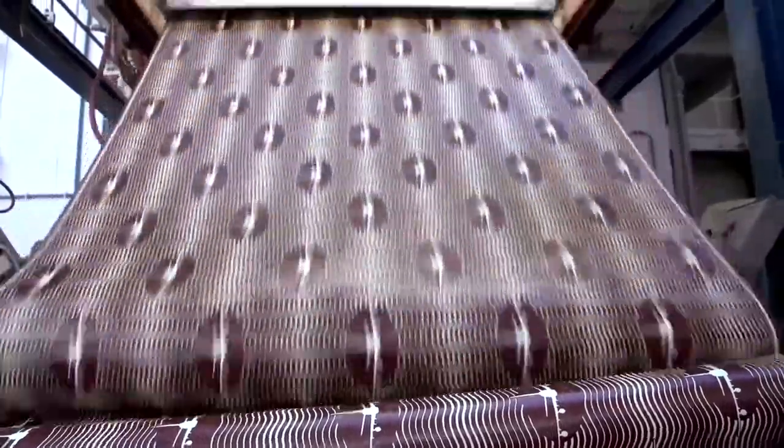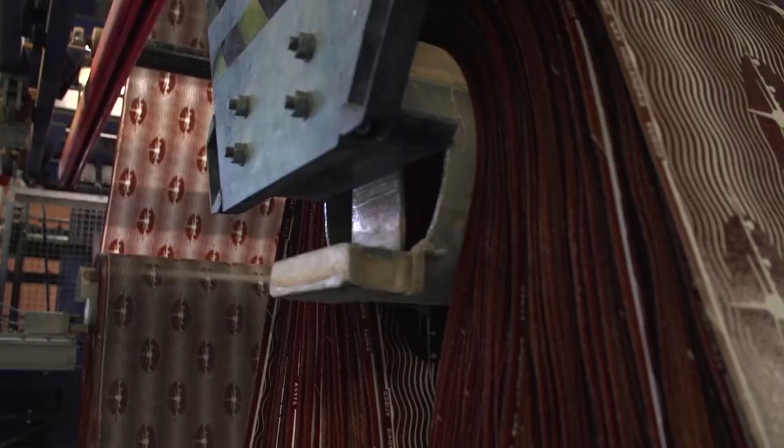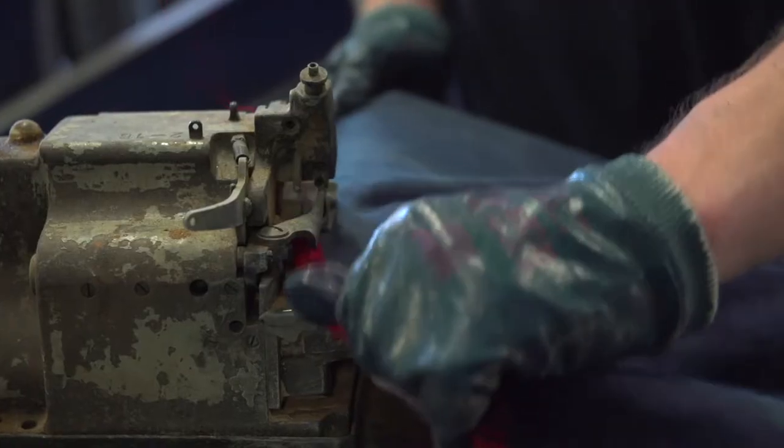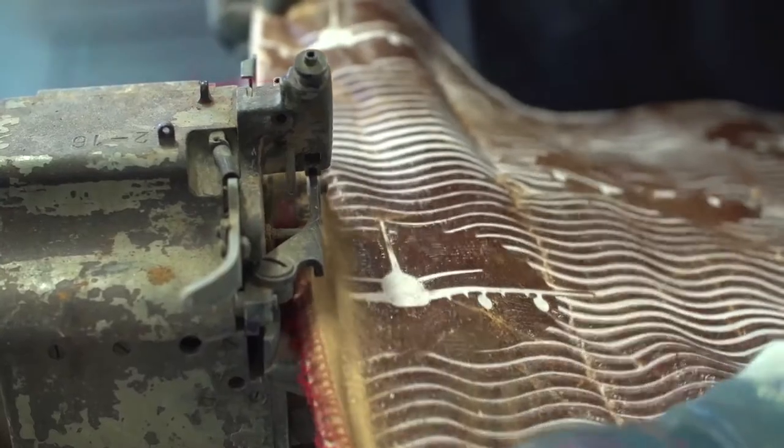In Africa they use it to wrap it around themselves so you see both sides of the fabric. So it's really important that the fabric is the same color and the same quality on both sides. It's a really difficult technique for manufacturers to do and Vlisco is the only one that can do it this way.